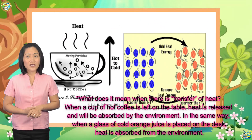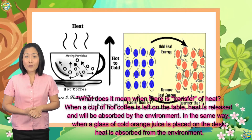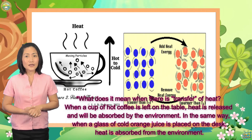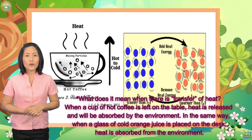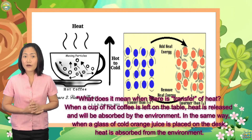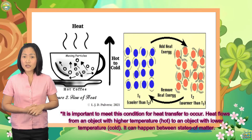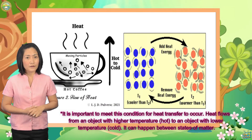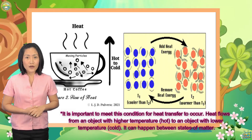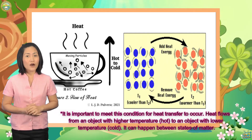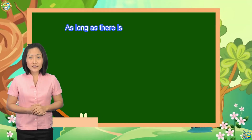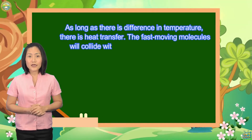What does it mean when there is transfer of heat? When a cup of hot coffee is left on the table, heat is released and will be absorbed by the environment. In the same way, when a glass of cold orange juice is placed on the desk, heat is absorbed from the environment. It is important to meet this condition for heat transfer to occur. Heat flows from an object with higher temperature to an object with lower temperature. It can happen between states of matter. As long as there is a difference in temperature, there is heat transfer.